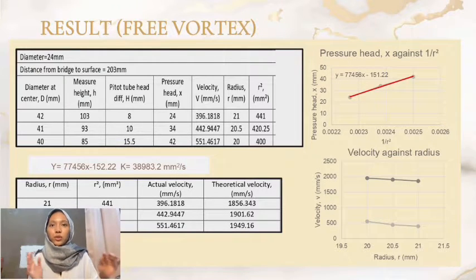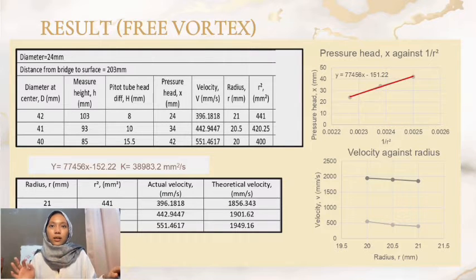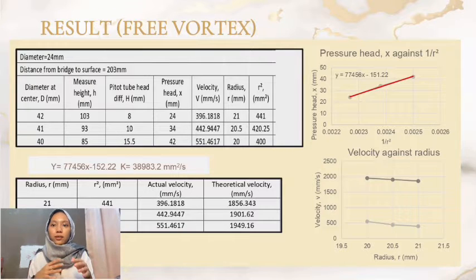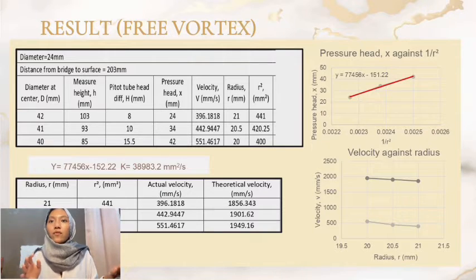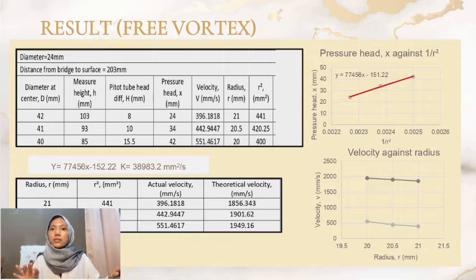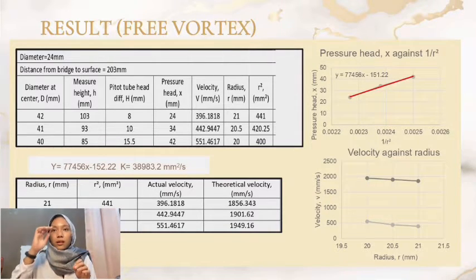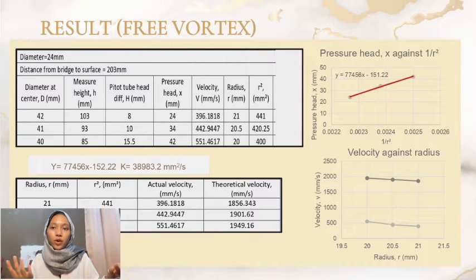In order to get the actual velocity and theoretical velocity for diameter 16mm, the same steps and calculations are used. From Figures 3 and 4, we can see that the gradient of the graph of pressure height against 1 over R squared slightly increases and is a bit different from the 8mm diameter before.